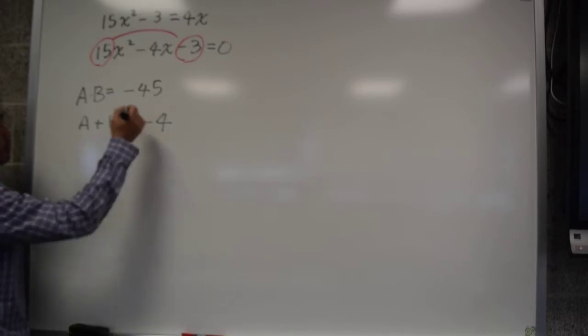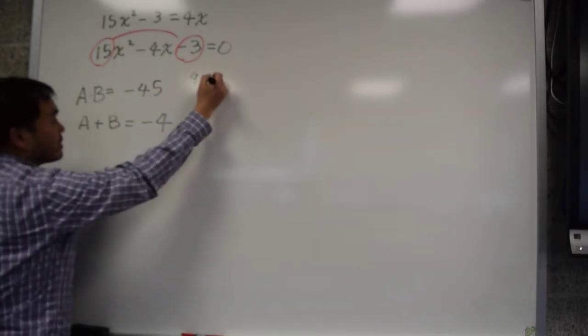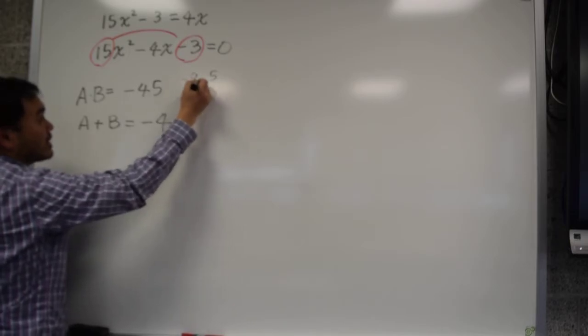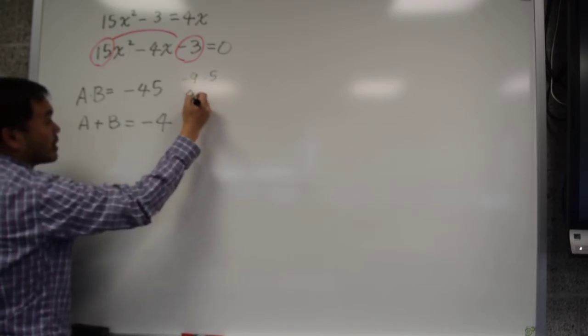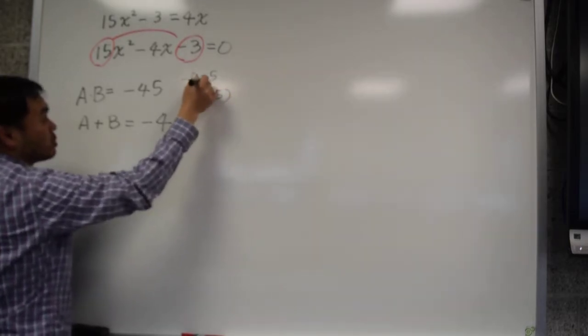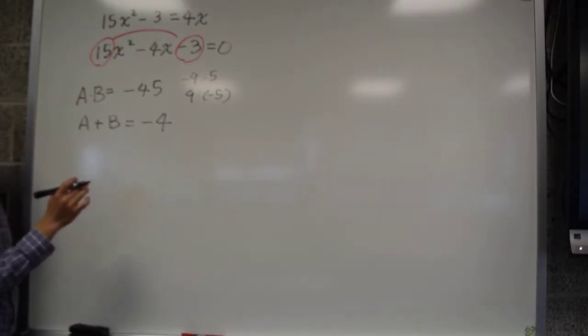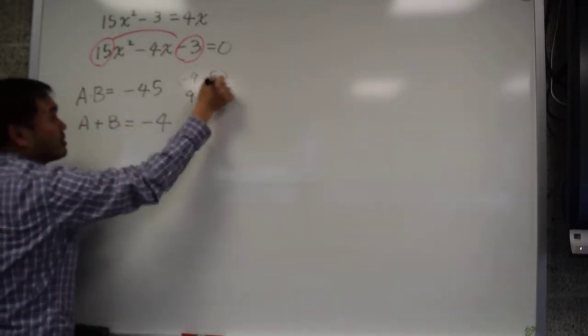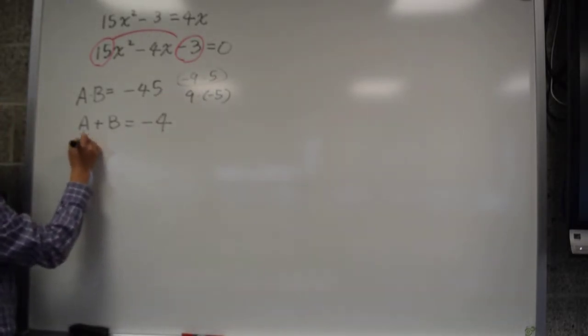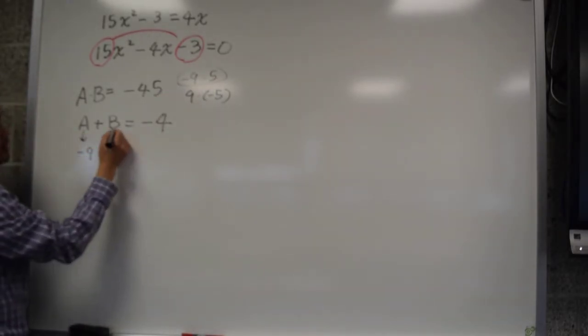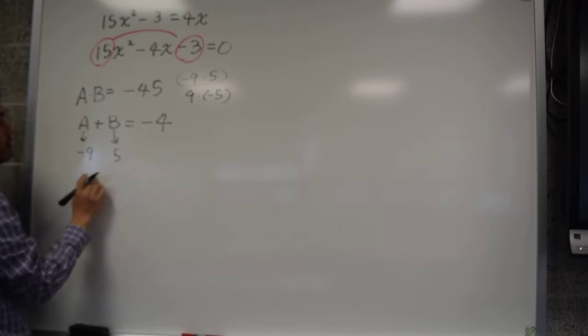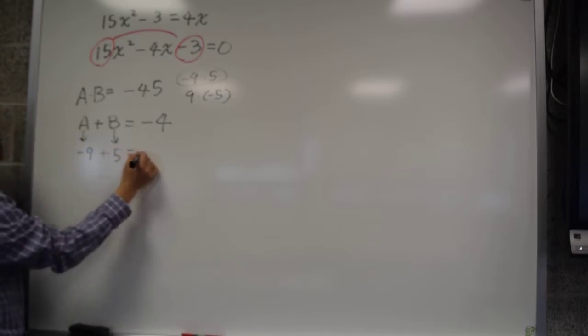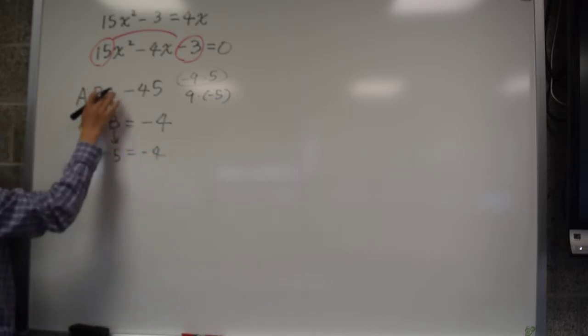We need, so we said 9 and 5. It's either negative 9 times 5 or 9 times negative 5. Which one of these two give you negative 4? Negative 9. Negative 9 and 5. So it's this one. So you choose a to be negative 9 and b to be positive 5. And then those two numbers satisfy both equations.